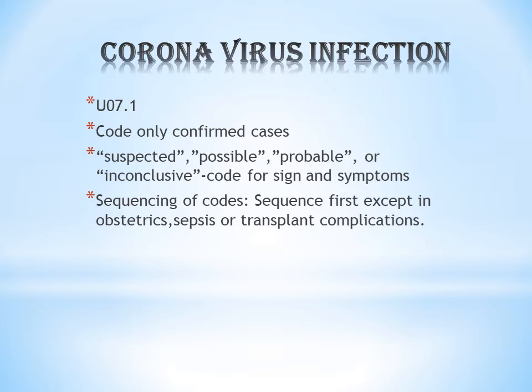Next is sequencing of codes. The COVID-19 code U07.1 is usually the sequencing priority code — it is listed first — except for a few cases. Those exceptions include: obstetric codes (pregnancy chapter O codes), sepsis codes, and transplant complication codes. In all other cases, we first use U07.1.